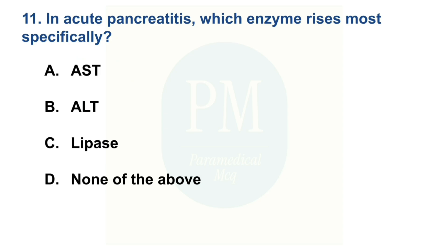In acute pancreatitis, which enzyme rises more specifically? Option A: AST. Option B: ALT. Option C: lipase. Option D: none of them. The correct option is Option C: lipase.